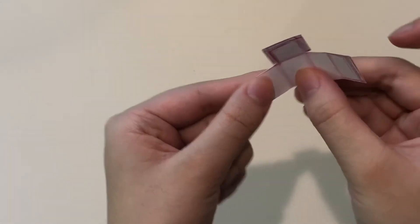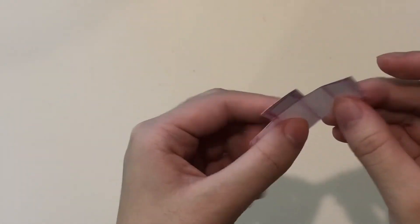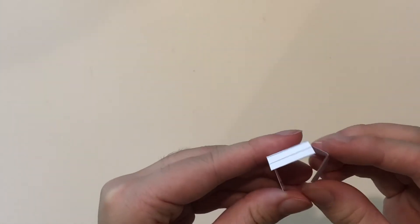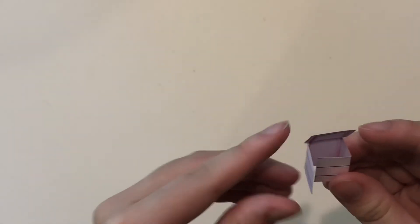Fold it on each of the edges to create a tiny box. Use the tinier rectangles around it to glue it together.